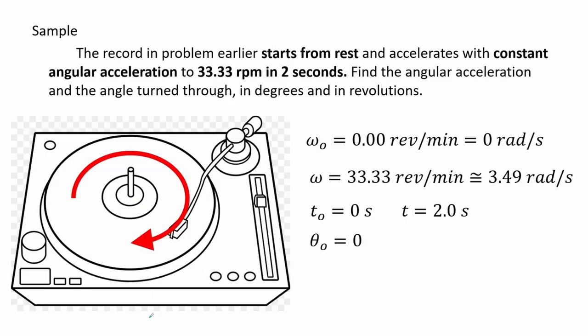Here we have the same problem but it starts from rest and accelerates with constant angular acceleration to 33.33 rpm in 2 seconds. We are asked to find the angular acceleration and the angle turned through in degrees and in revolutions. We also add the assumption that it starts at time 0 at a position of theta-not equals 0.